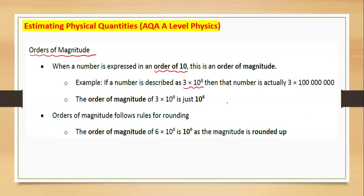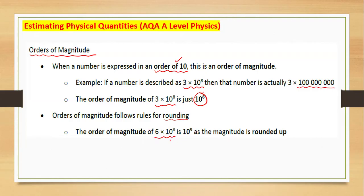As an example, the fastest thing in the universe is electromagnetic radiation — light. Its speed is 3 × 10⁸ meters per second, which has too many zeros to write out. The order of magnitude of 3 × 10⁸ is simply 10⁸, because we only write the power of 10. The order of magnitude follows rounding rules: if you have 6 × 10⁸, it rounds up to 10⁹.